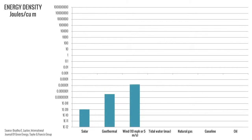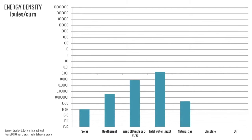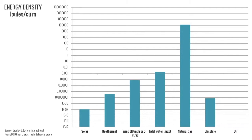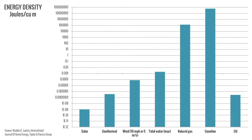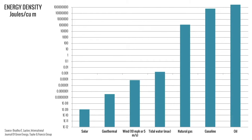This is shown on the energy density graph, a logarithmic graph where each number on the vertical axis equals ten times the number beneath it, rather than ten plus the lower number as most graphs work. As can be seen, solar energy is quite diffuse and produces only 0.000015 joules per cubic meter, where joules are a measure of energy.